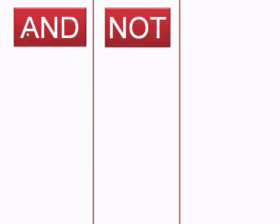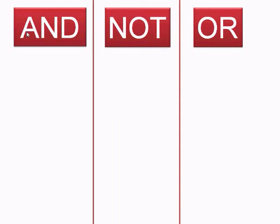Now that you have the three basic functions down — AND, NOT, and OR — I must inform you that not every database performs these operations using those words. Therefore, you may use a plus sign in place of AND in Google, placing it before the quotation mark term you wish to search, or use a minus sign in front of the quotation mark term you wish to leave out, such as when we search social media — you would put a minus before Facebook — or a plus between terms to expand the search with the function of OR.